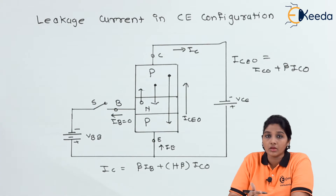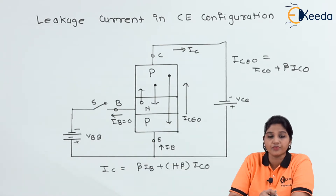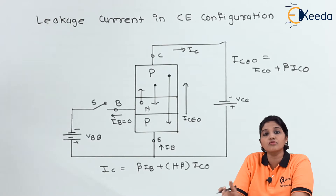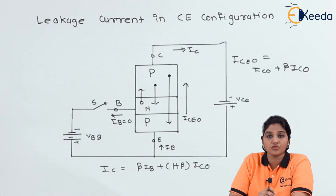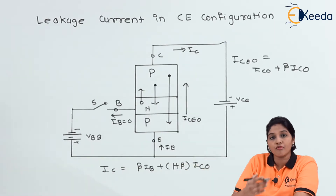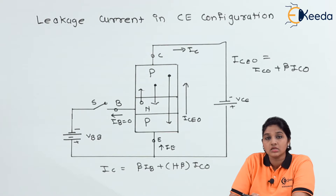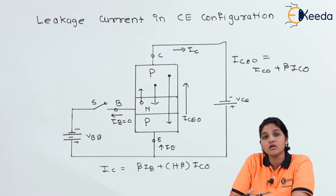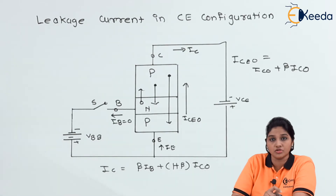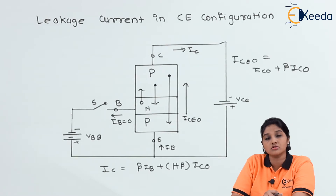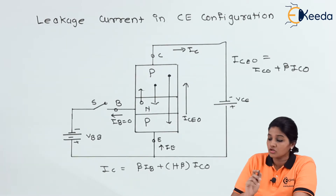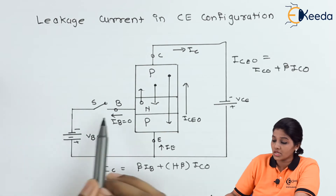Next, the holes start moving towards the collector region. Most of the holes move towards the collector region because very few holes get combined with the electrons in the base region. So the collector current IC is formed. The collector current has the maximum value compared to the base current because most of the holes are injected into the collector region from the emitter region. So the collector current is also called the injected current.